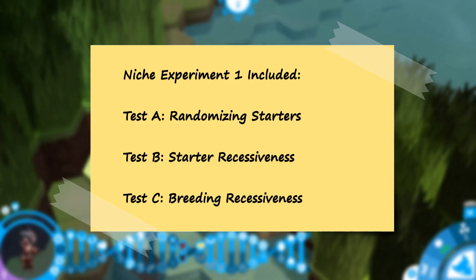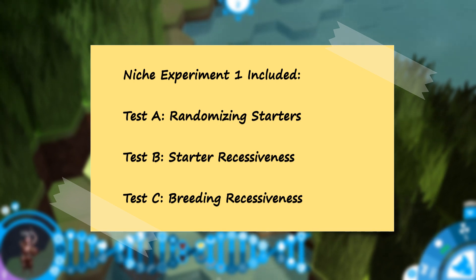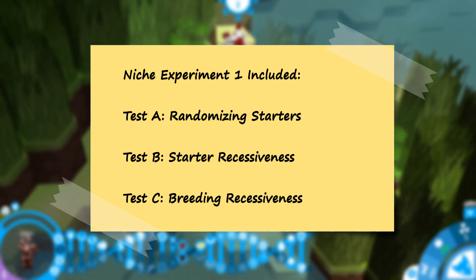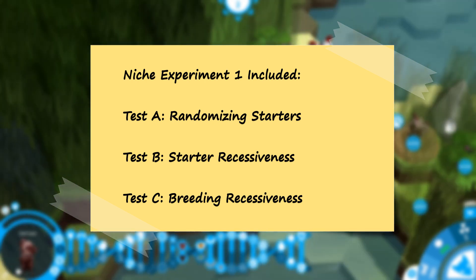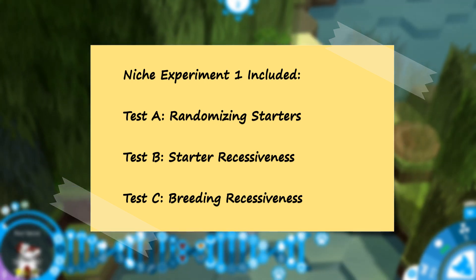I sincerely apologize for any confusion that might have caused. To minimize such issues moving forward, I will now refer to sub-experiments within a video as tests, and will label tests alphabetically. If I want to reference a specific test in a previous video, I will do so with a combination of a number and letter. I will refer to it as Niche Test 1C, representing the third test in my first experiment video for the game.